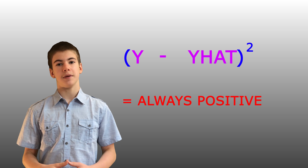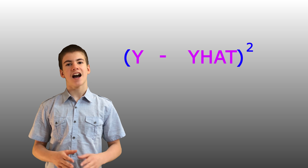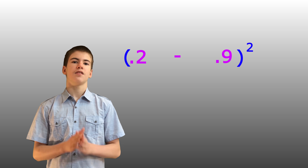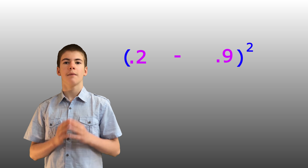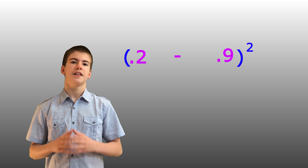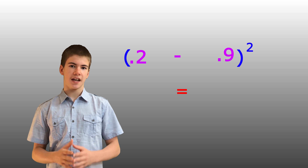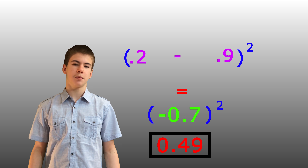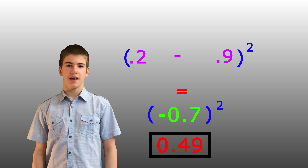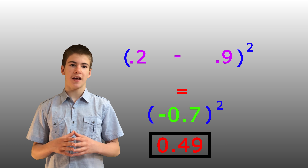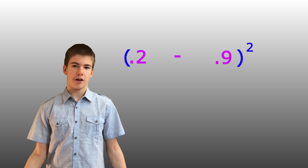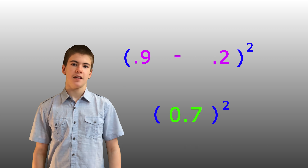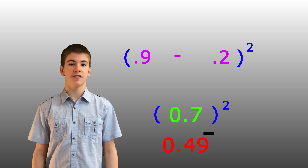Let's take a look at an example. Let's say that our neural net had an output of 0.9 and our raw data had an output of 0.2, whatever this data might represent in the real world. This would make our equation for the cost function 0.2 minus 0.9, before we square this value. 0.2 minus 0.9 equals negative 0.7. Squaring this would give us positive 0.49. If we were to flip-flop our equation and subtract 0.9 minus 0.2, we would get 0.7. If we were to then square this value, we would once again get positive 0.49.